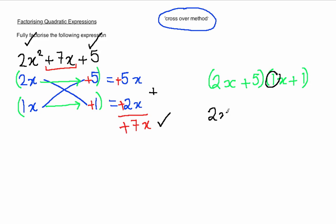So our final answer is 2x plus 5 in one bracket, and the other bracket is x plus 1. You can check your answer by using FOIL or expanding these two brackets out and simplifying in another way.